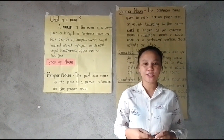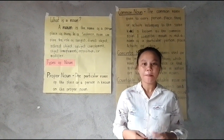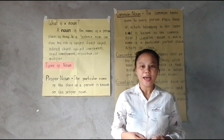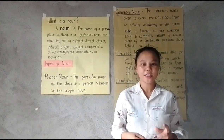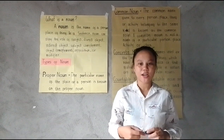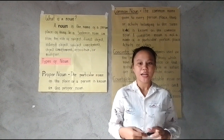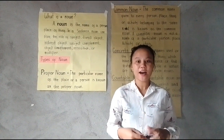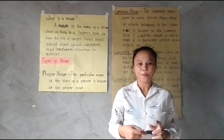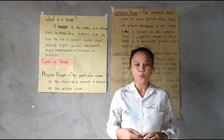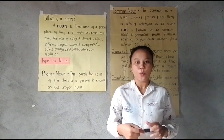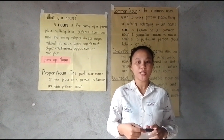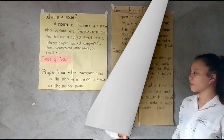A common noun refers to a non-specific person, place, or thing. For example, dog, girl, and country are examples of common nouns. In contrast, proper nouns name a specific person, place, or thing — they are the opposite of common nouns. While proper nouns are capitalized, common nouns do not need to be capitalized.